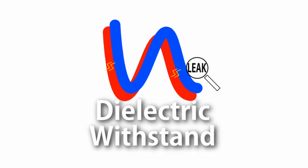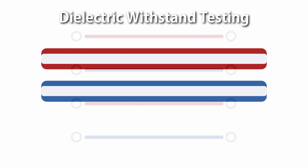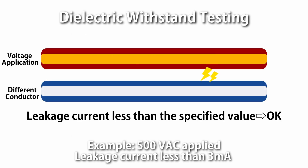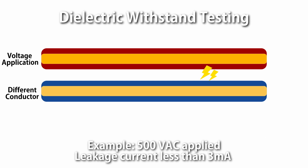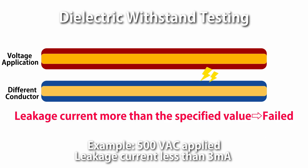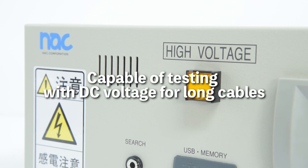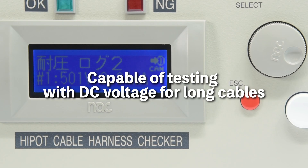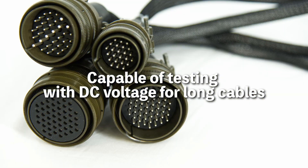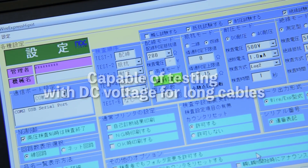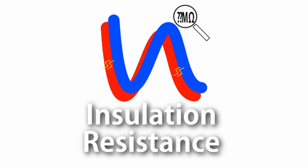In the dielectric withstand testing, high voltage is applied to determine if there is any discharge phenomenon between the different conductors. If the current value leaking into different conductors exceeds the specified value, the cable fails the test. In addition to AC dielectric withstand testing, we also have models that can perform with DC voltage for long cables.